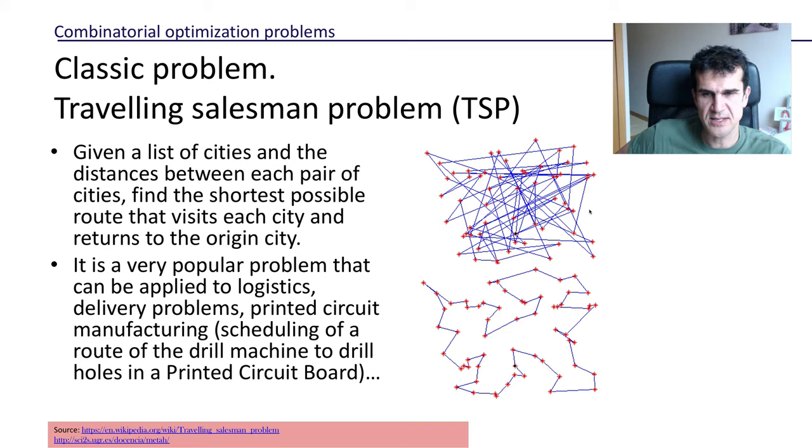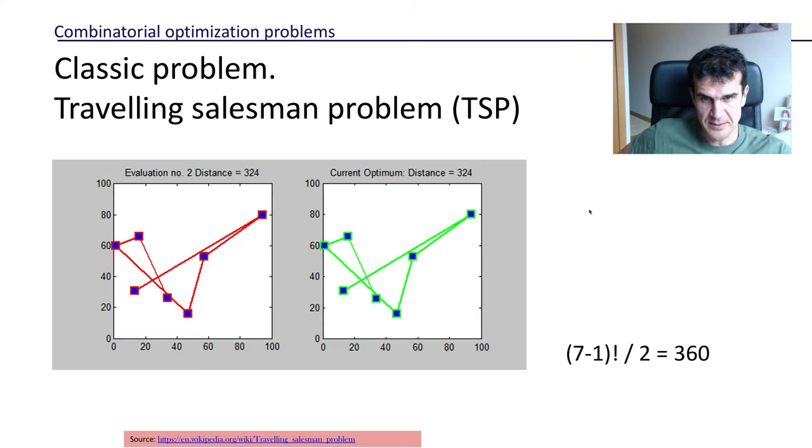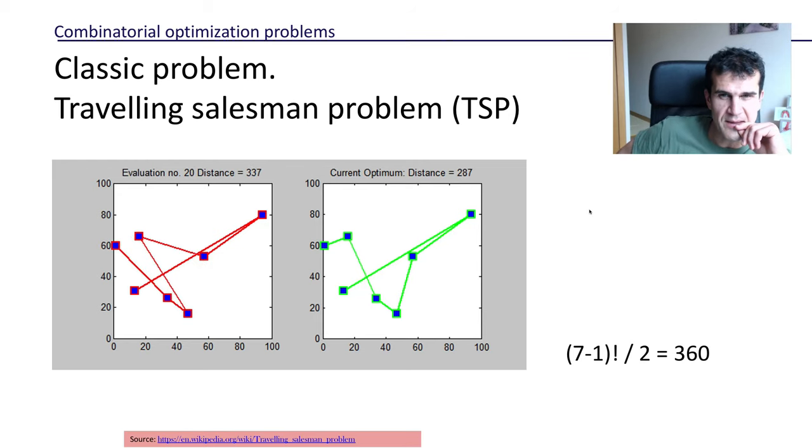In logistics and delivery problems, at the time of manufacturing PCBs—printed circuit boards—where you have to drill different holes in the board and you want to find the shortest route so it takes the shortest time to process and manufacture one printed circuit board.